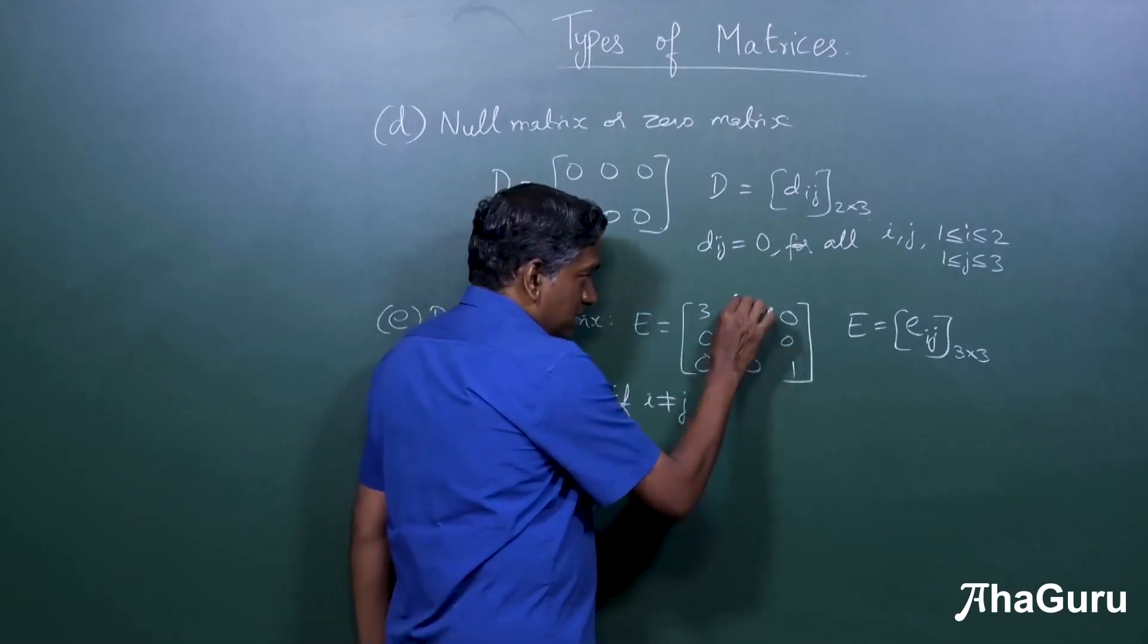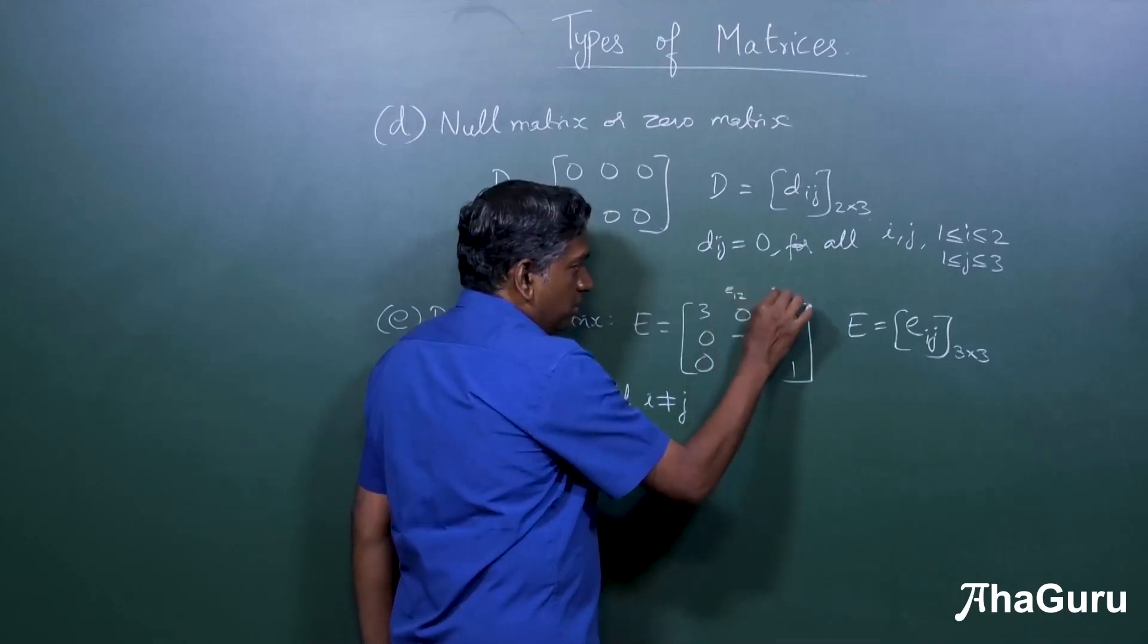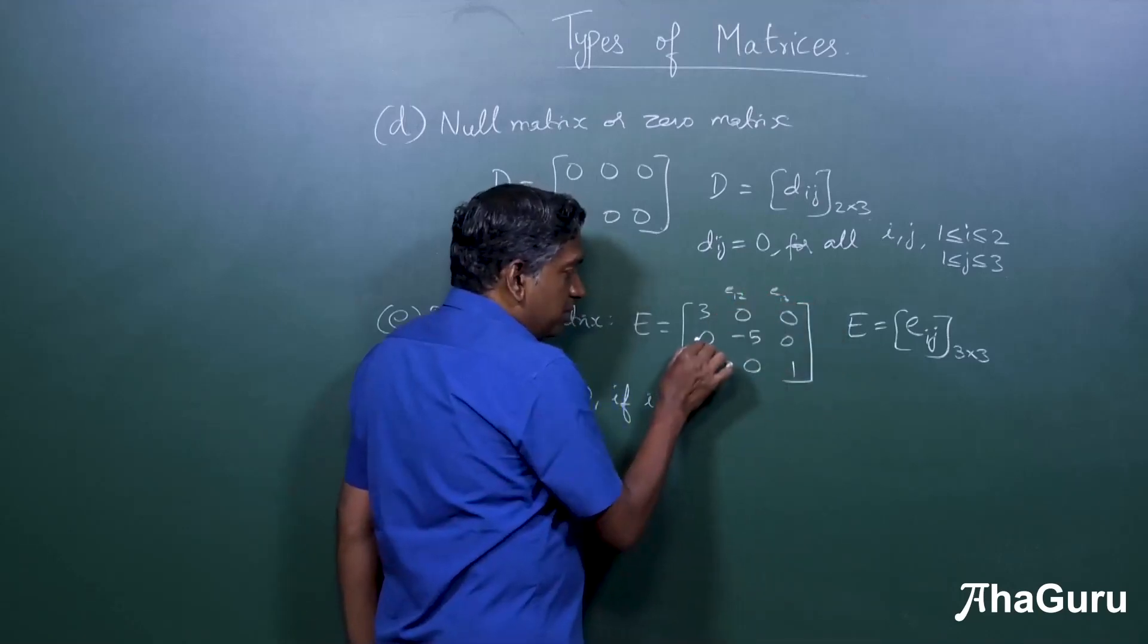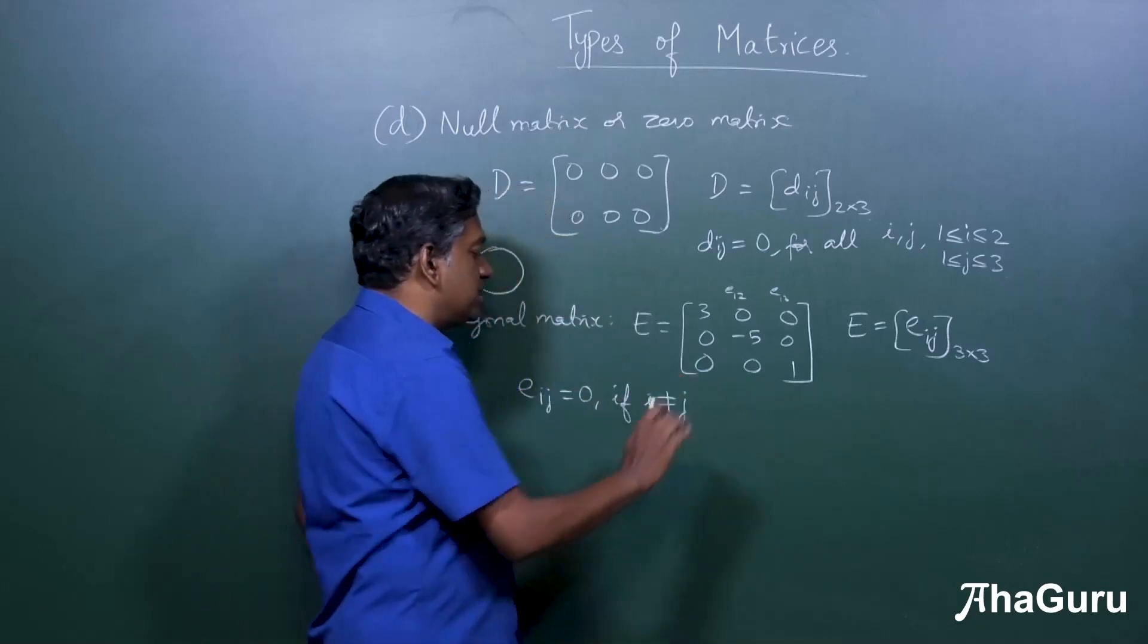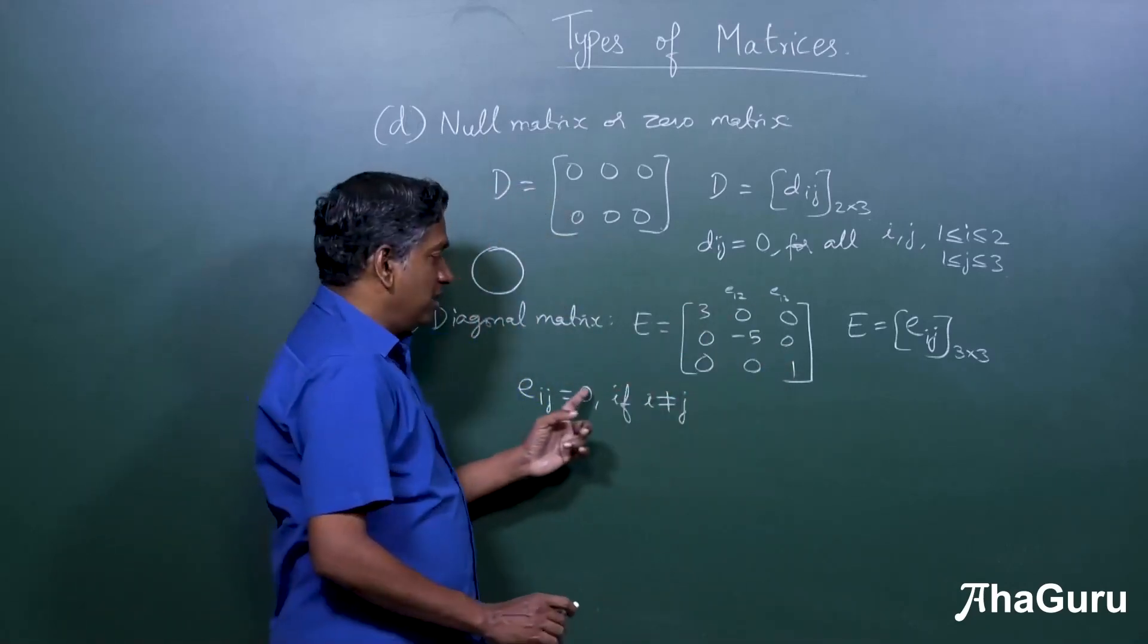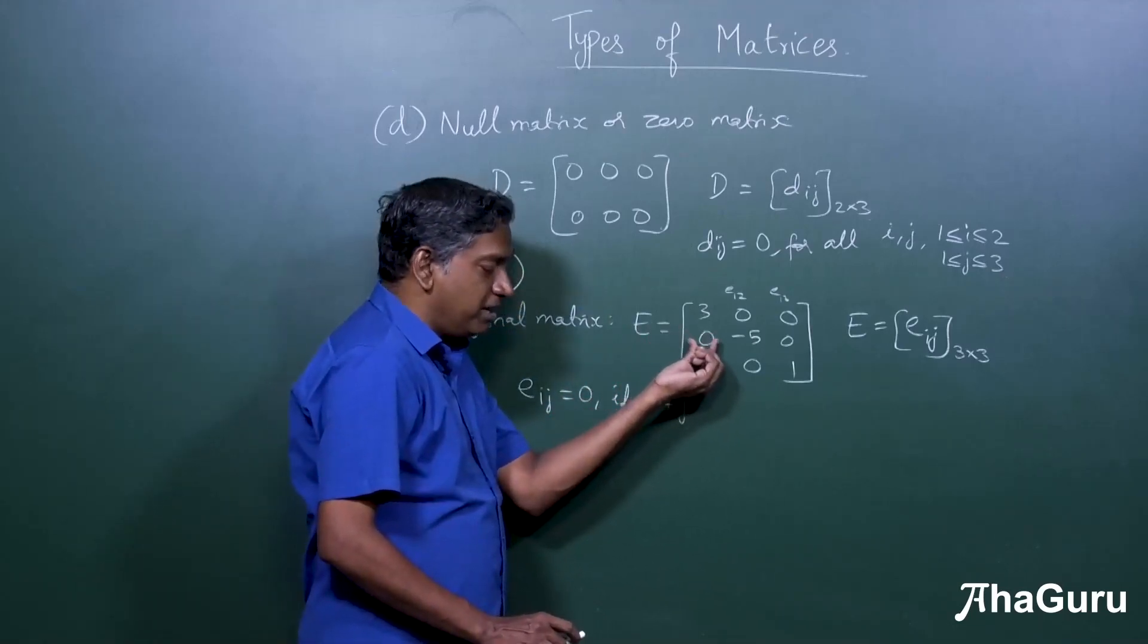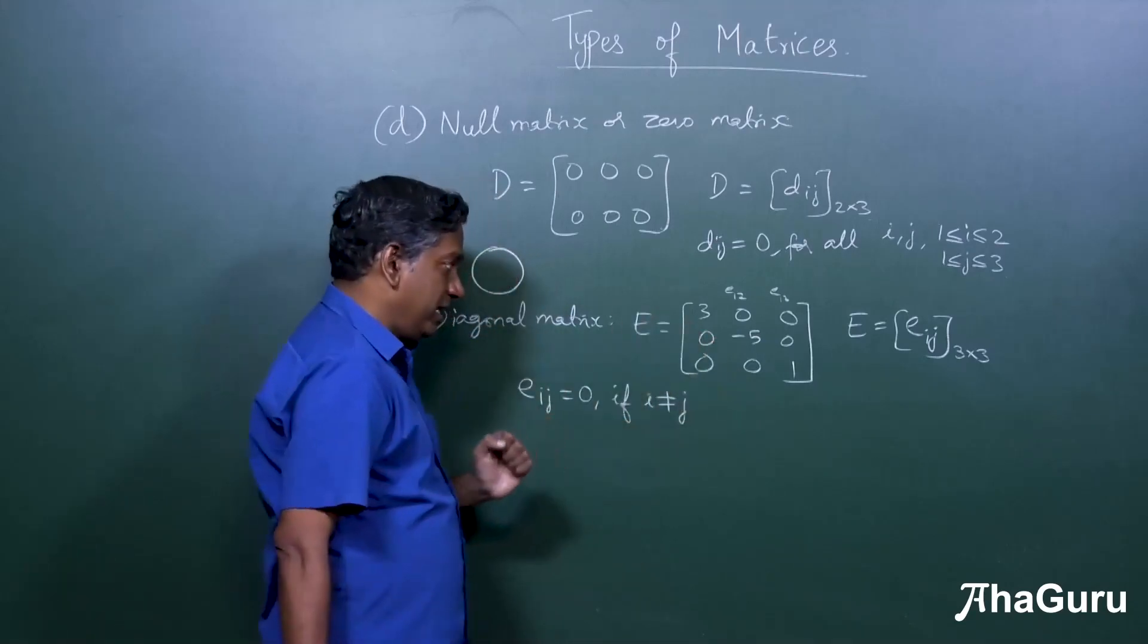So for example, this is first row, second column, first row, third column. So this is E12, E13, this will be E21, etc. All such entries are zero. If i and j are not equal, then the matrix entry for that particular entry value will be zero.